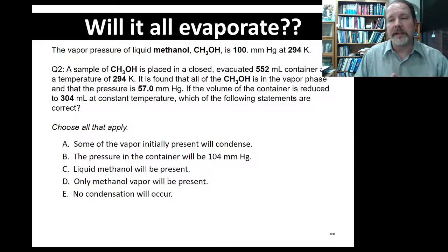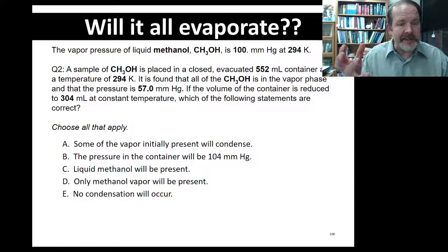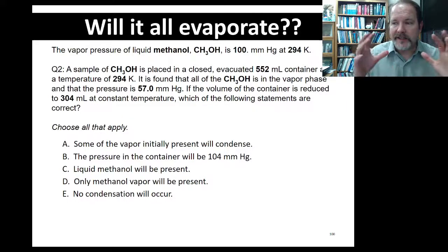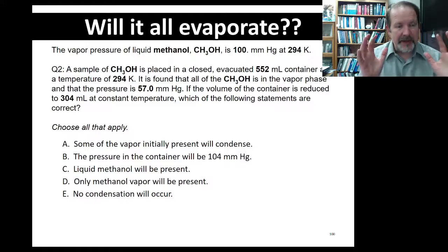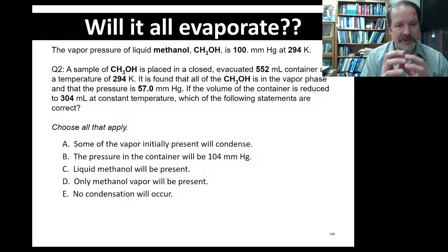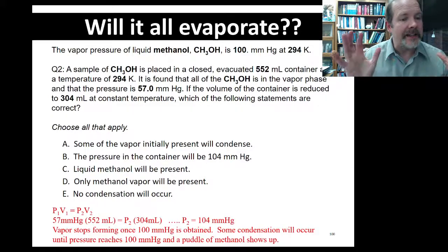There's a second question you'll encounter in your homework under this same category of thinking. Here we have liquid methanol with a vapor pressure of 100 millimeters of mercury at 294 Kelvin. A little bit of methanol is placed in a container and it all evaporates, so the pressure inside is 57 millimeters of mercury. Now take that 552-milliliter container and shrink it down to 304 milliliters — temperature stays the same, same moles. We use Boyle's Law to find the new pressure: when I shrink the volume to 304 milliliters, the pressure inside becomes 104 millimeters of mercury.